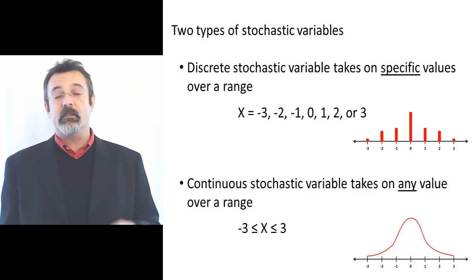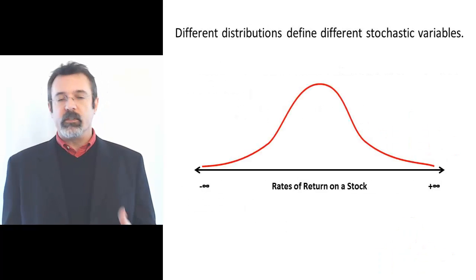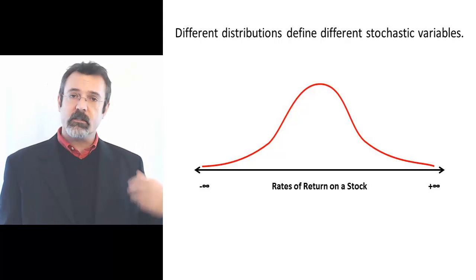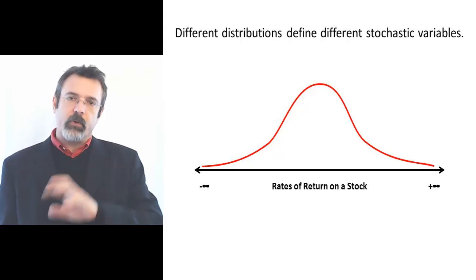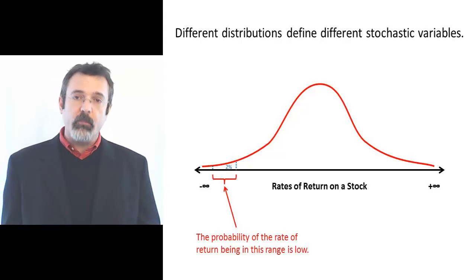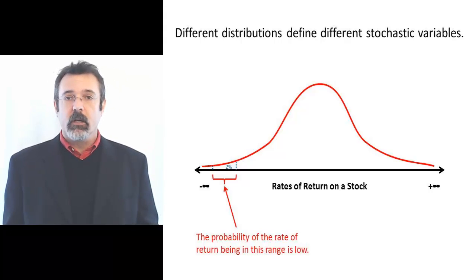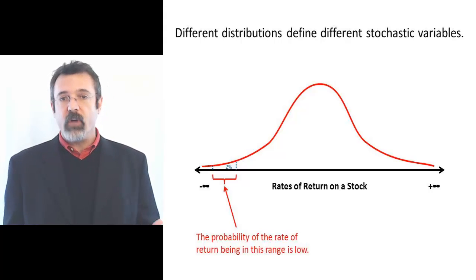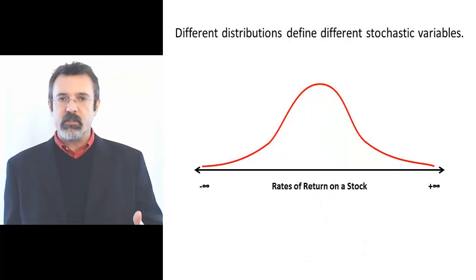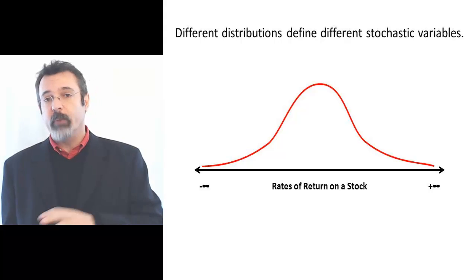Different probability distributions define different stochastic variables. For example, the rate of return on a stock is a stochastic variable. Sometimes the rate of return is large and positive, sometimes it's large and negative, sometimes it's near zero. We can look at the probability distribution for the rate of return on the stock and say things like the probability of the rate of return being in this range is 2%, or the probability of it being in this moderate range is 15%. The distribution looks this way because the rate of return can be large and negative, large and positive, or anything in between.